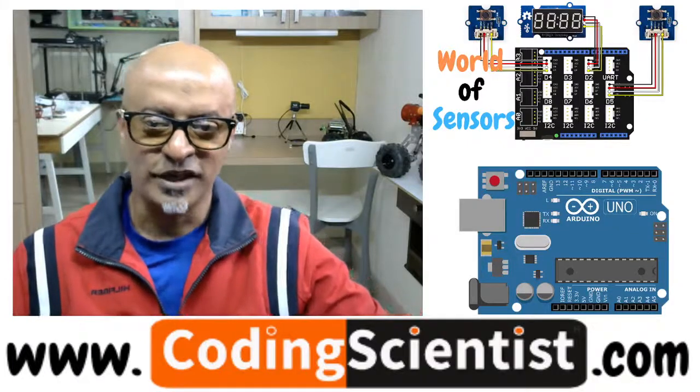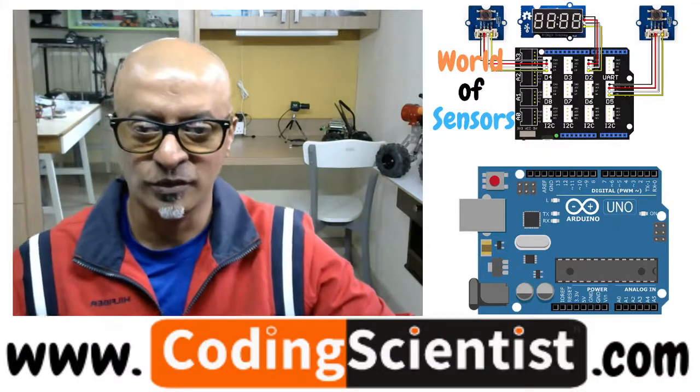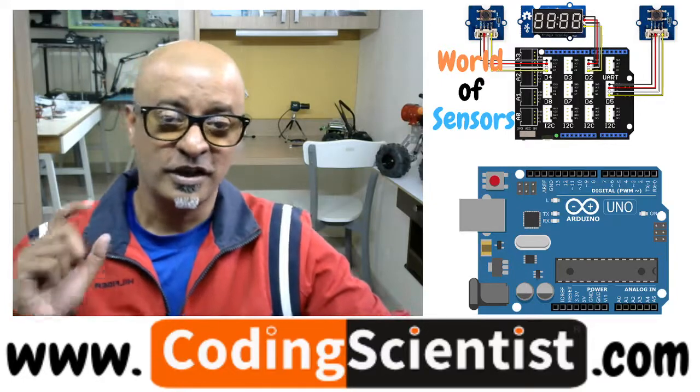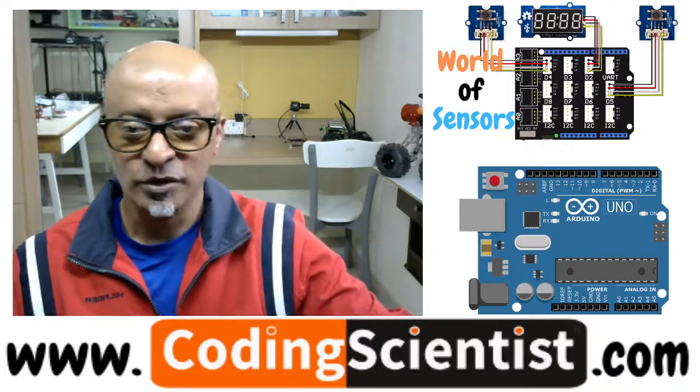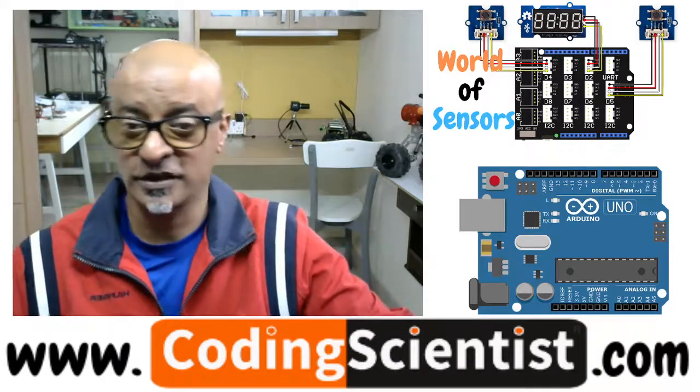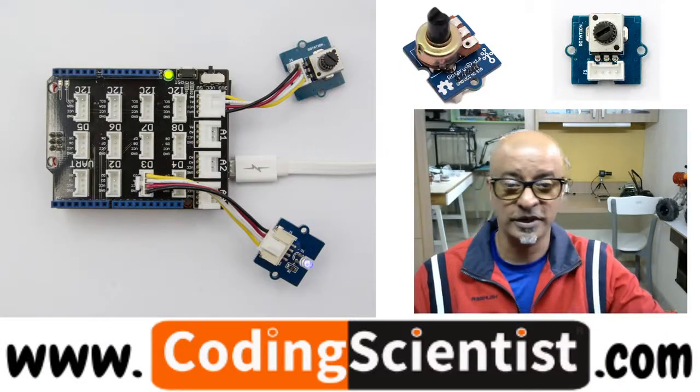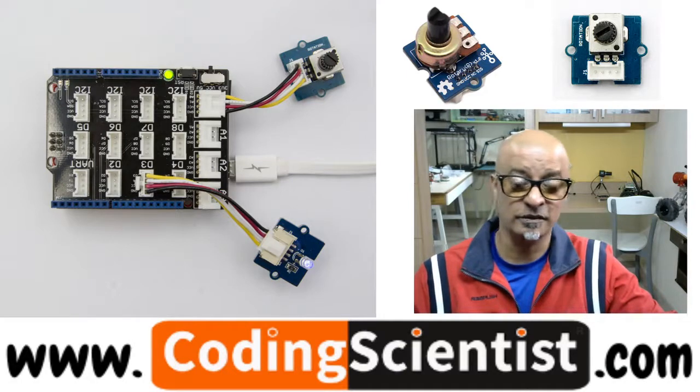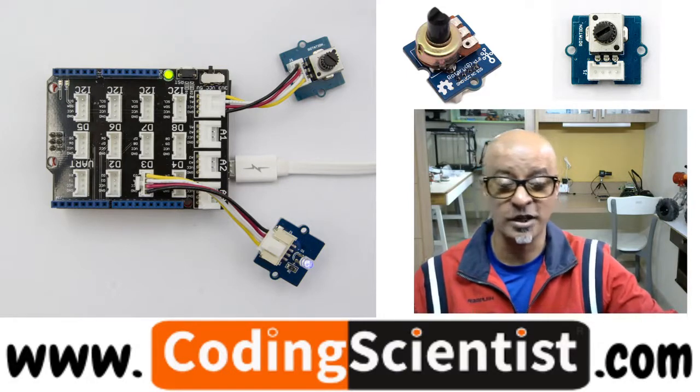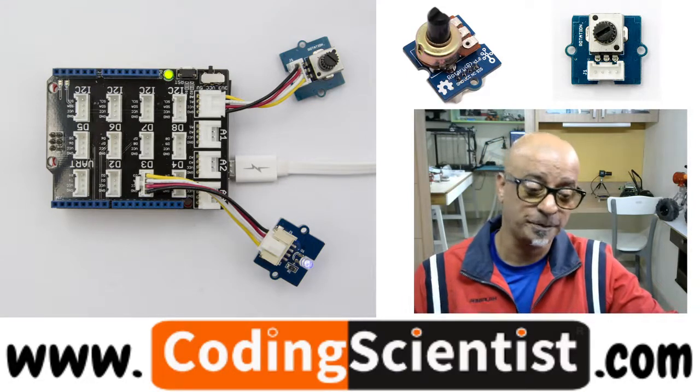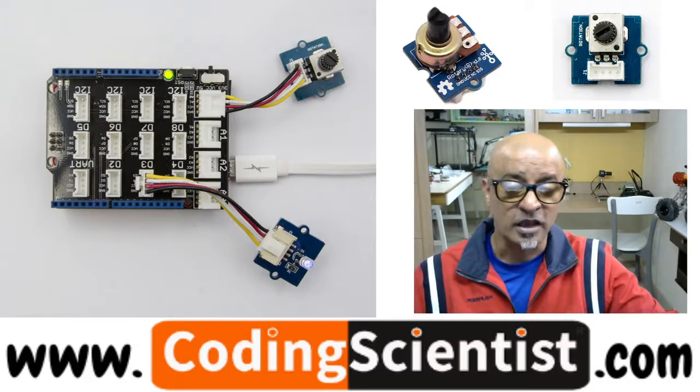Hello everyone, welcome back to CodingScientist.com. You are watching World of Sensors. In this lesson we will move on to the next sensor - a pretty interesting sensor called rotary angular sensor. This is widely used in robotics, IoT, and automation.